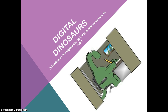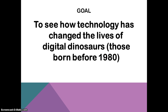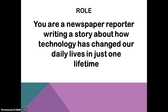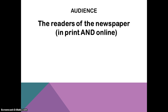You're going to find someone considered a digital dinosaur and do an interview with them. The goal is to see how technology has changed the lives of those born before 1980. Your role is that of a newspaper reporter writing a story about how technology has changed daily lives in just one lifetime. Your audience is the readers of the newspaper, which could be print or online — more and more newspapers are dropping print and moving online, so your article will be written with both in mind.